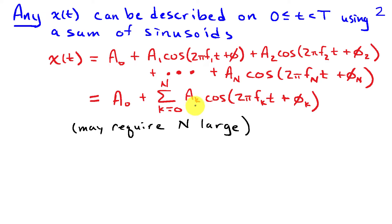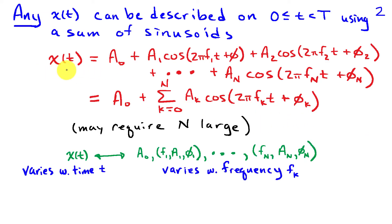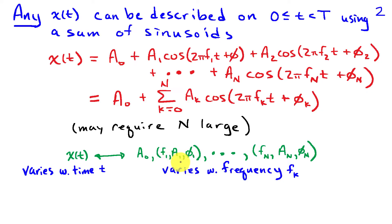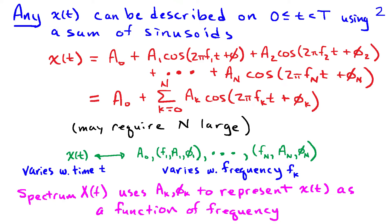Subsequent material will discuss how to find aₖ, fₖ, and φₖ. Looking at both sides of this equation: on the left we have x(t) varying with time; on the right we have cosines that also vary with time, but since they're cosines, only a few parameters matter — the amplitudes aₖ, the frequencies fₖ, and the phases. So on the right-hand side, I can look at the amplitudes and phases as a function of frequency fₖ, and that tells me how the signal is described with respect to frequency. We define that to be the spectrum X(f), which uses amplitudes and phases to represent x(t) as a function of the frequencies present in it.